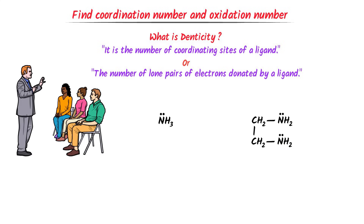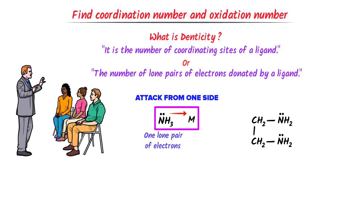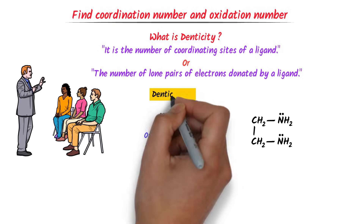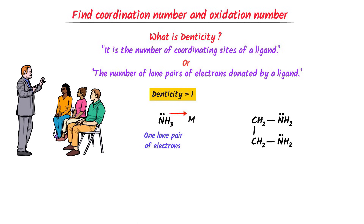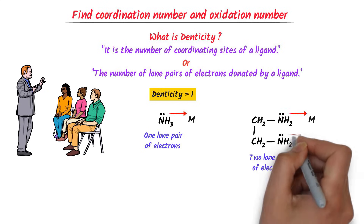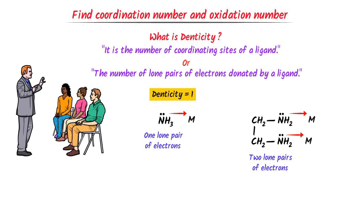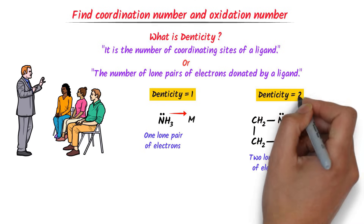Consider these two ligands. NH3 has only one lone pair of electrons — it can donate only one lone pair to any metal atom to form a coordinate bond. So this ligand can attack from only one side; thus its denticity is 1. The EN molecule has two lone pairs of electrons and can donate them to two metal atoms, so it can attack from two different sides; thus its denticity is 2.